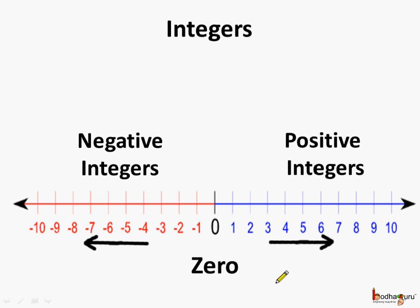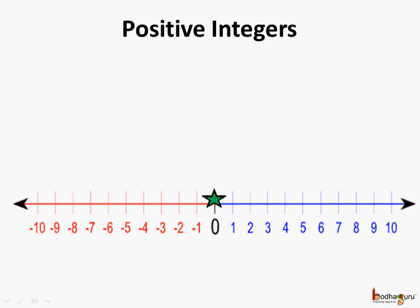And if we move in the opposite direction, that is towards the left side, then the value of the integer decreases. So we can say 1 is less than 2 because 1 is on the left side of 2. Same way, 0 is less than 1, minus 1 is less than 0, minus 2 is less than minus 1, minus 3 is less than minus 2, and so on.